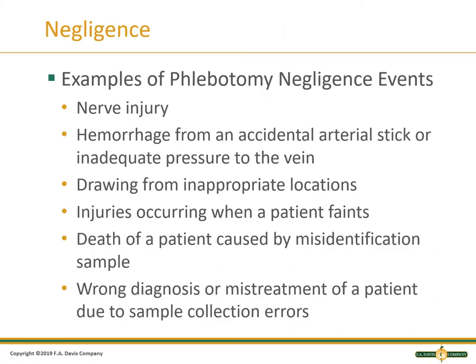Here are some examples of phlebotomist negligence. The most common phlebotomy event that can initiate litigation is nerve injury, hemorrhage from an accidental arterial puncture, or inadequate pressure to a vein after collection. Drawing from an inappropriate location, such as the same side as a mastectomy, is also an example. Other examples include injury occurring when a patient faints, death of a patient caused by misidentification of a patient or specimen, and wrong diagnosis or mistreatment of a patient due to specimen collection errors.